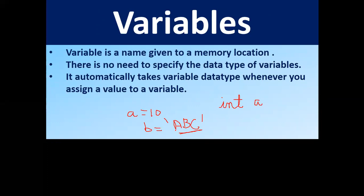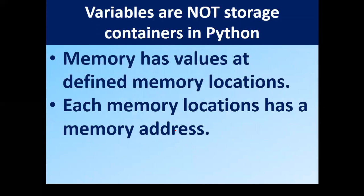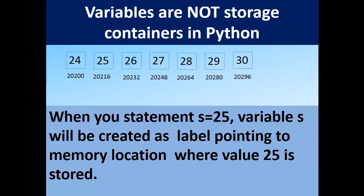Variables are not storage containers in Python — keep this in mind, it is the most important point. Memory has values at defined memory locations, and each memory location has a memory address. So values exist at defined memory locations, and every memory location has a unique address.